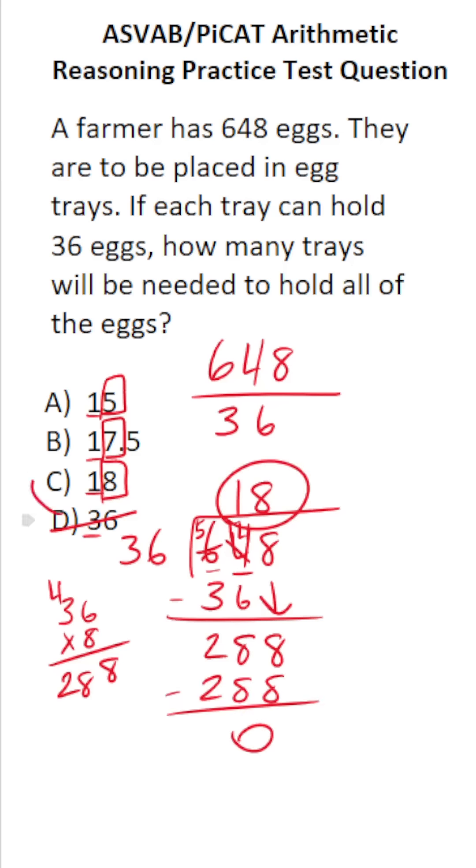In other words, this farmer is going to need C, 18 trays to hold all of his eggs. Please like and subscribe.